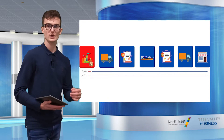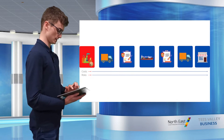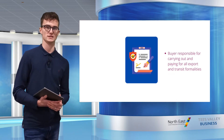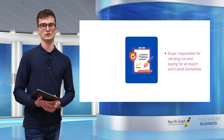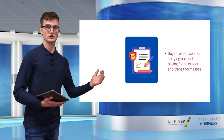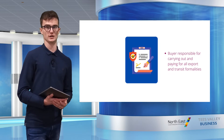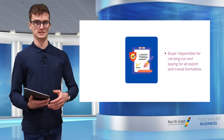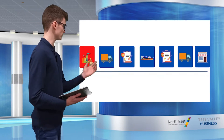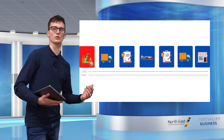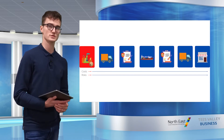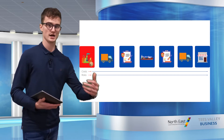I also want to take a closer look at the export documentation under Ex Works. As you can see, this is blue — it is again the buyer's responsibility. They are responsible for carrying out and paying for all export and transit formalities, such as export licences, security clearance and pre-shipment inspection. The buyer can ask for the seller's assistance to complete these formalities, but this is still at the risk and cost of the buyer. It's fair to say that Ex Works can cause difficulties for suppliers as well as buyers.